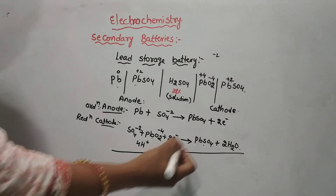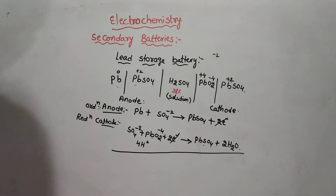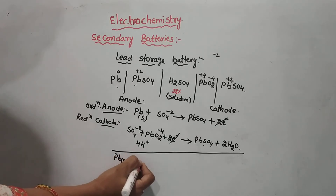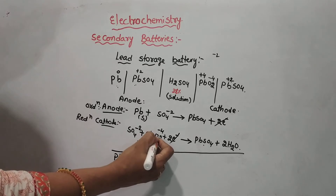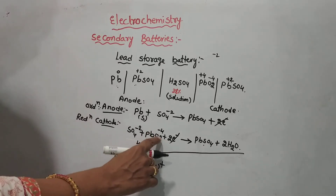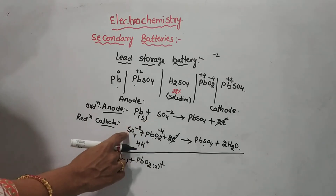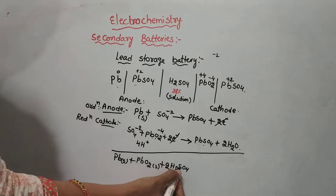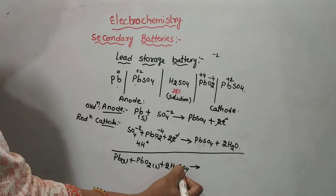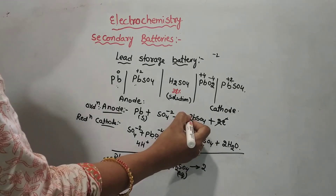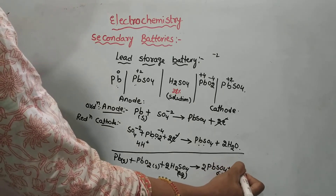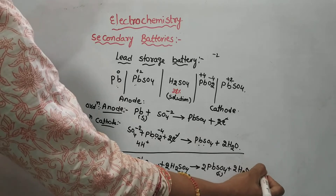For the overall reaction, the 2 electrons from anode and cathode cancel. The total reaction is: Pb (solid) + PbO2 (solid) + 2H2SO4 → 2PbSO4 + 2H2O (liquid). So lead, lead oxide, and H2SO4 together give lead sulfate and water, producing electricity.